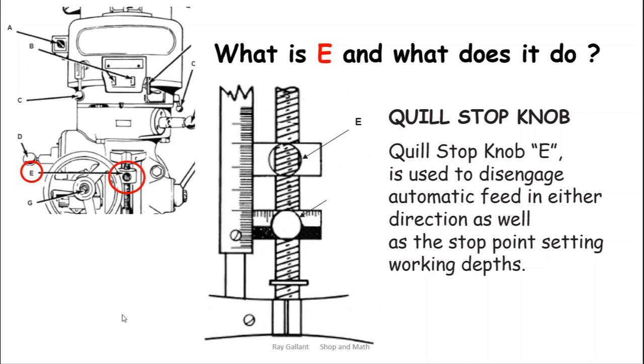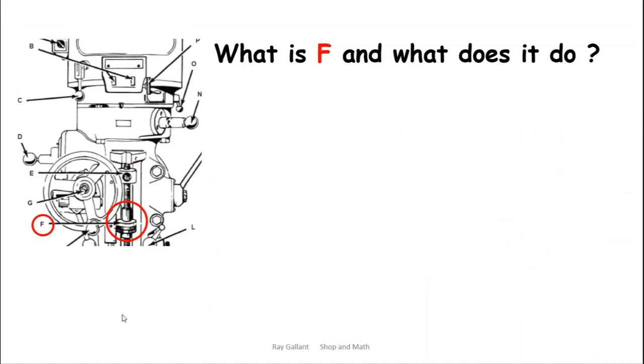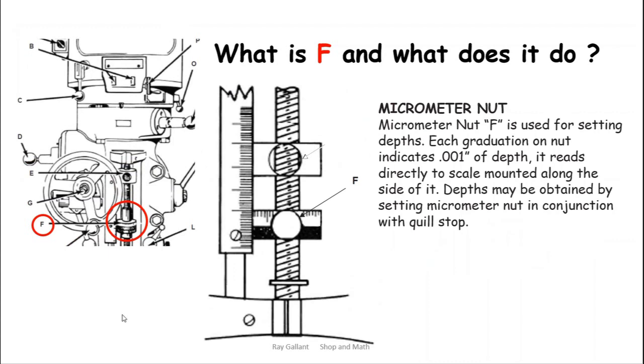What does F do? It's a micro nut. This piece here is a thumb split so you can push on that piece with your thumb and then move it up and down rapidly so you don't have to keep spinning it. Not all machines are equipped with that.